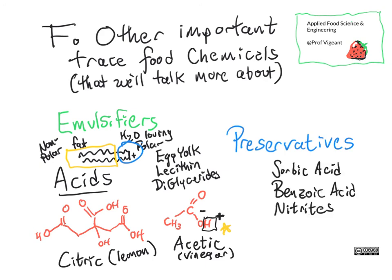Finally, I also want to mention preservatives. Some examples are shown here, and we'll get into their chemical makeup as we need to, but they are usually present in amazingly small quantities. In some cases they're there only as preservatives; in some cases they also serve as a flavor compound. Citric acid and acetic acid can both be preservatives, but because they're thought of more as flavor components, they don't get listed that way on the label. Whereas benzoic acid really has no reason to be in food except to be a preservative, and therefore it's listed that way.